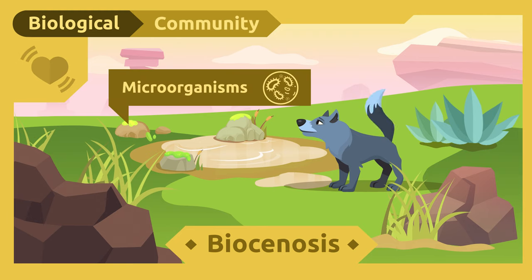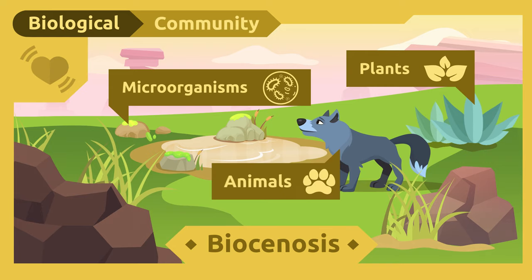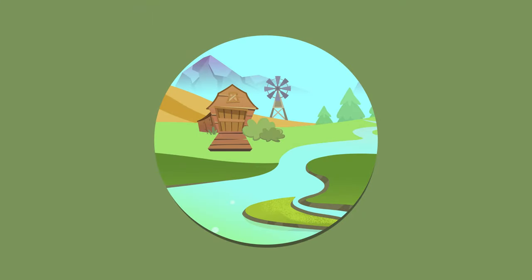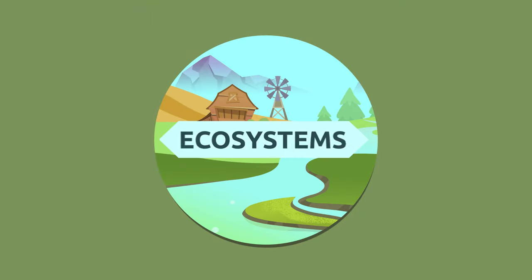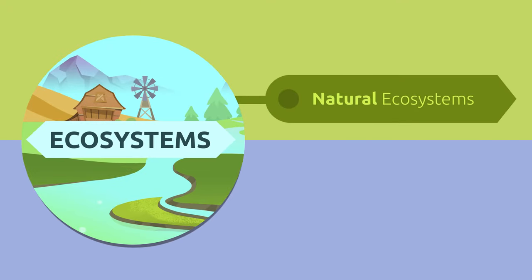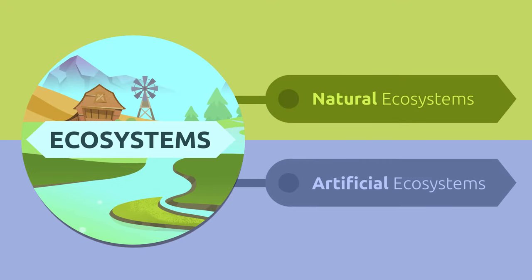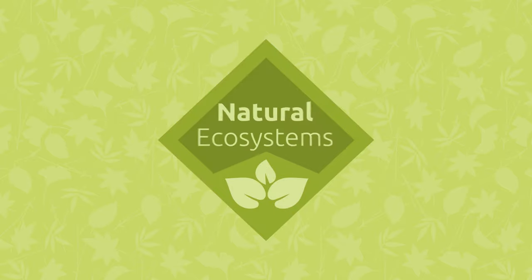Among the living beings that make up the communities in an ecosystem, we can find microorganisms, plants, and animals. We distinguish between two types of ecosystems: natural ecosystems and artificial ecosystems.